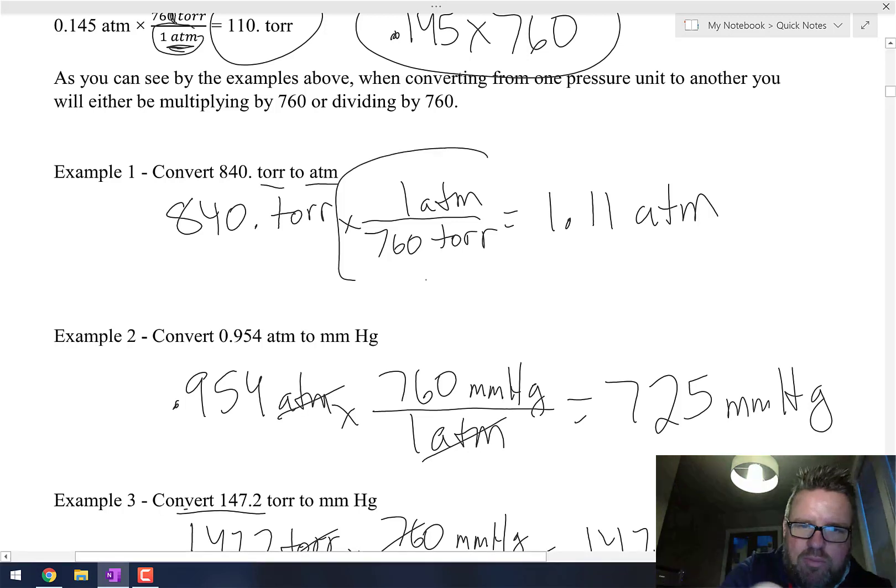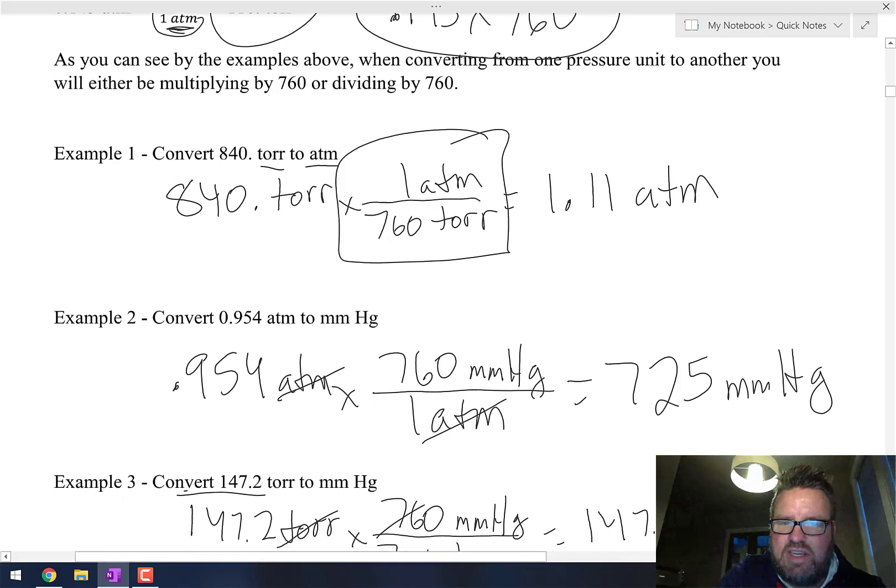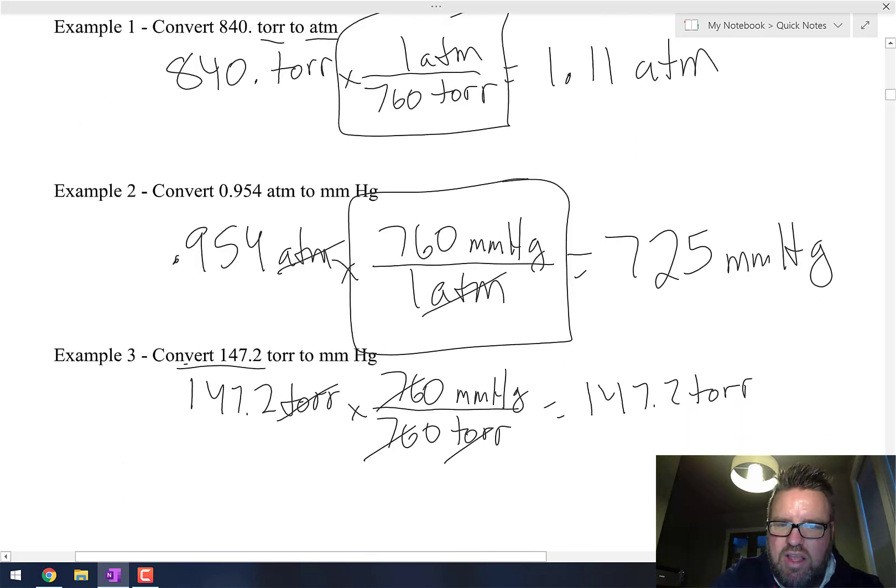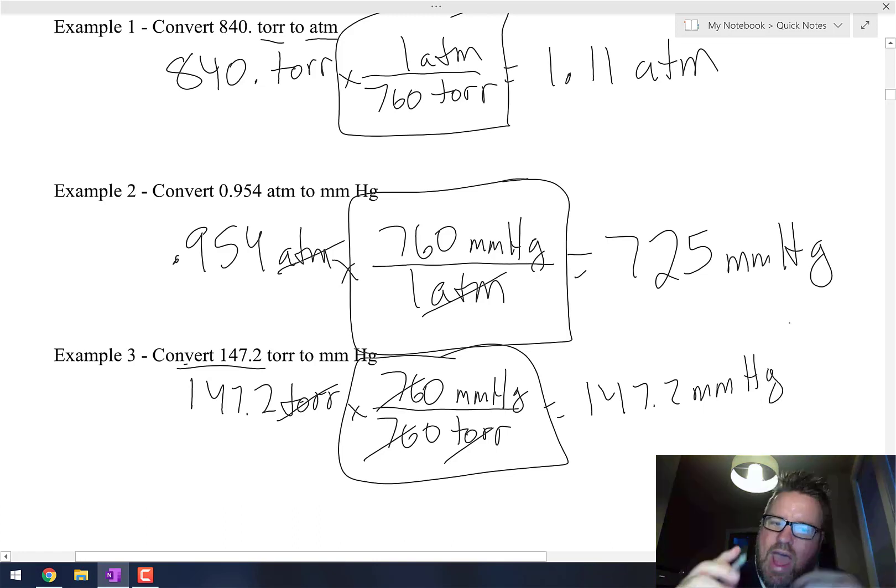In general, when you're converting between one pressure unit or another, you're either going to be dividing by 760 or you're going to be multiplying by 760. You do have those rare cases where you're going between torr and millimeters of mercury—I even screwed up, you guys probably caught it—that should have been millimeters of mercury. When you go between those two, it happens to be the exact same number that you started with.